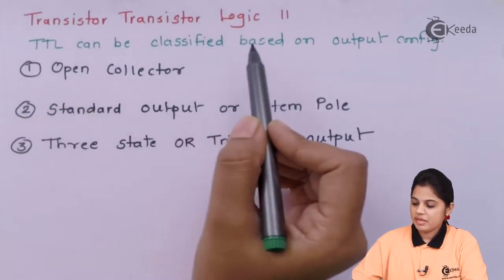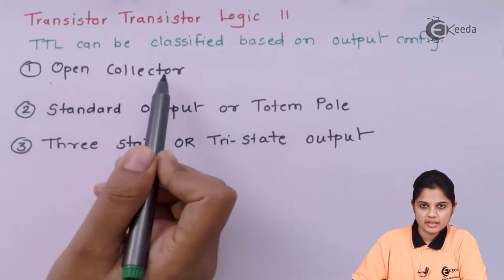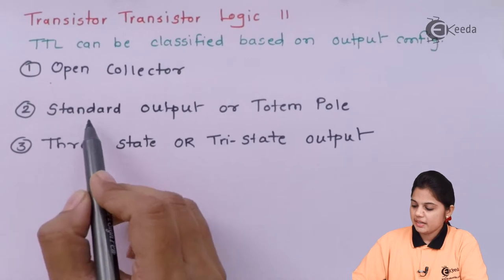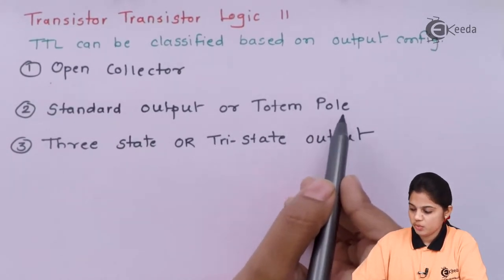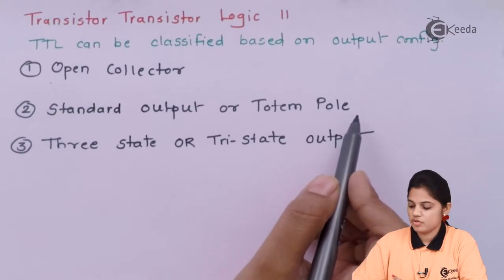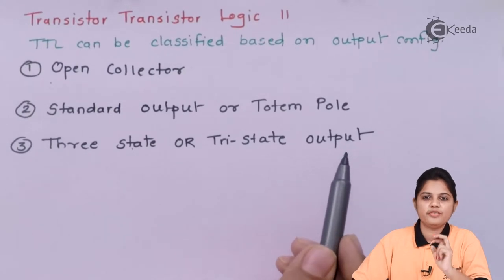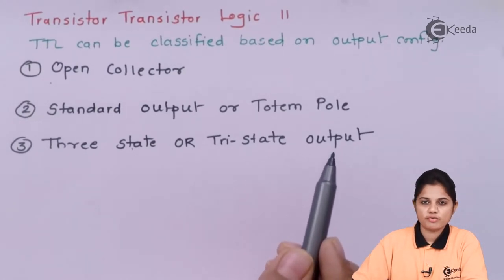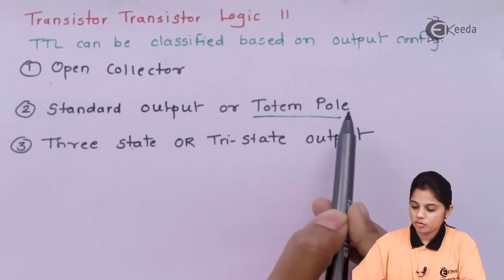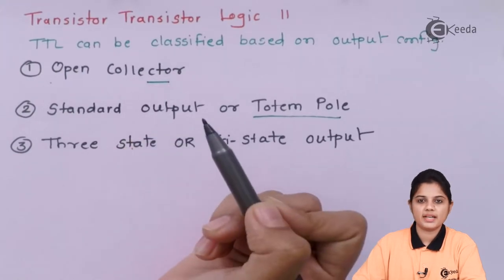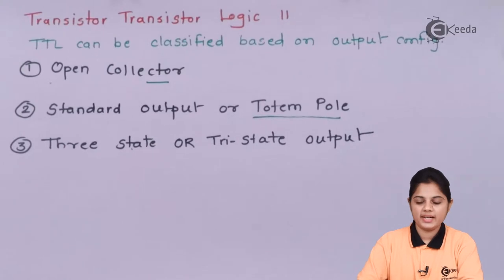TTL can be classified based on the output configuration. The first one is open collector, where fanout is possible. The second is standard output or totem pole — the configuration studied in the previous video — where fanout is not possible. The third one is a three-state or tri-state output, where we get different states of operation at the TTL output. We will first see the drawback of totem pole, then how it is overcome by open collector, and finally how to utilize the tri-state output NAND gate.